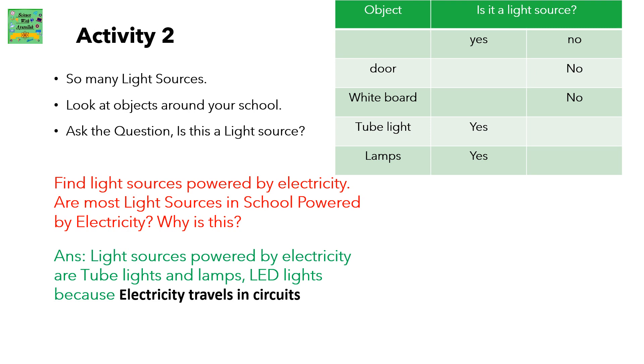Answer: light sources powered by electricity include tube lights, lamps, and LED lights, because electricity travels in circuits.